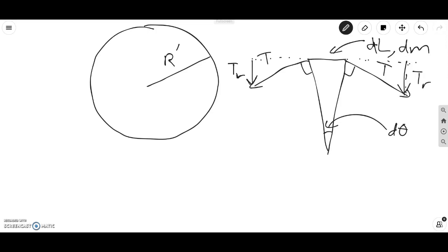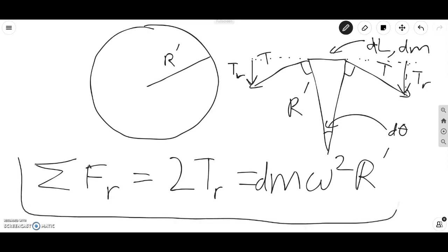So we can write out Newton's laws. Let's just assume that, unlike usual, the positive radial component is inward. So the sum of the forces in the radial direction is equal to 2 times TR. And this will equal dm, because we're considering a very small piece, omega squared, and note that the radius here is R prime. So we have Newton's laws here, and our job is to use this to solve the problem.